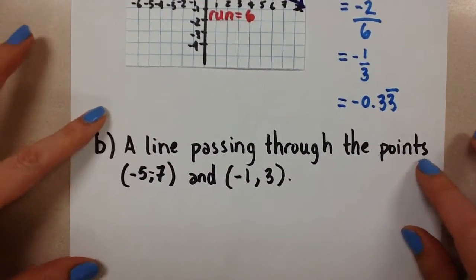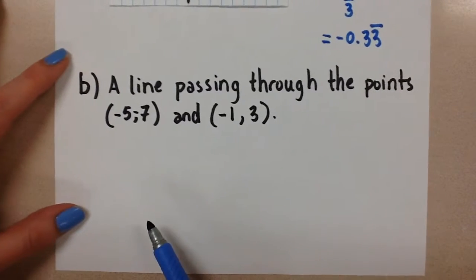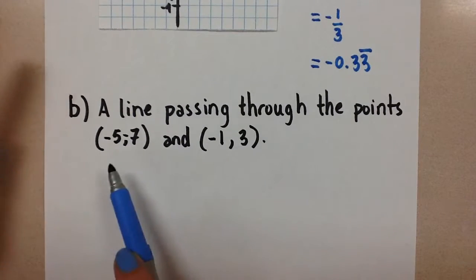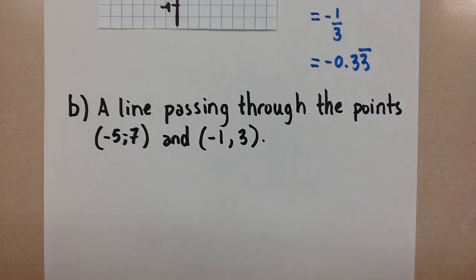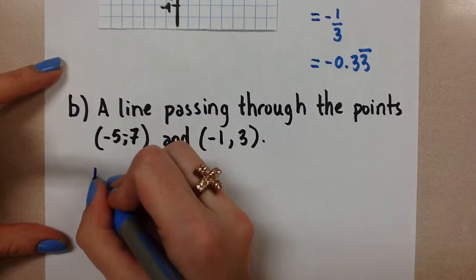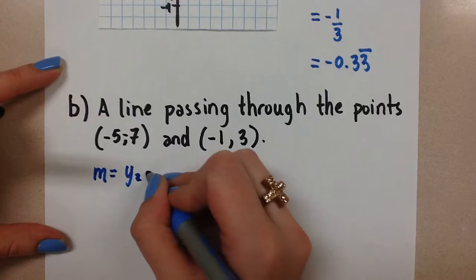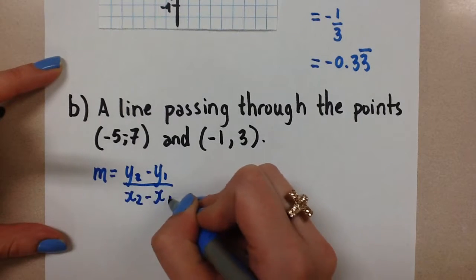Now let's look at the other problem we have where we have to find the slope of the line passing through these two points. We don't have a graph given and we want to avoid having to graph these two points. We want to do this algebraically. So instead of using the rise over run formula I'm going to use the formula slope equals y2 minus y1 over x2 minus x1.